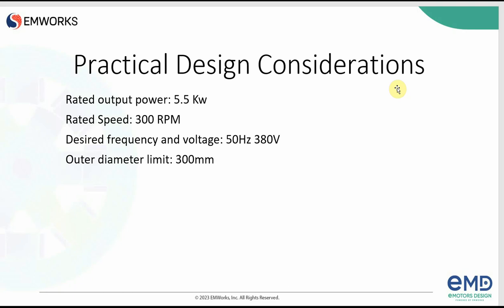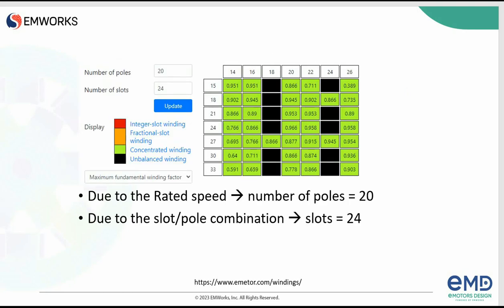The rated output power of the generator was 5.5 kilowatts and the rated turbine speed was 300 RPM. The desired frequency and voltage at 300 RPM were 50 Hz and 380 volts. Due to the turbine blades, we had an additional limit on the outer diameter — it should be less than 300 millimeters. Now let's follow the design workflow.